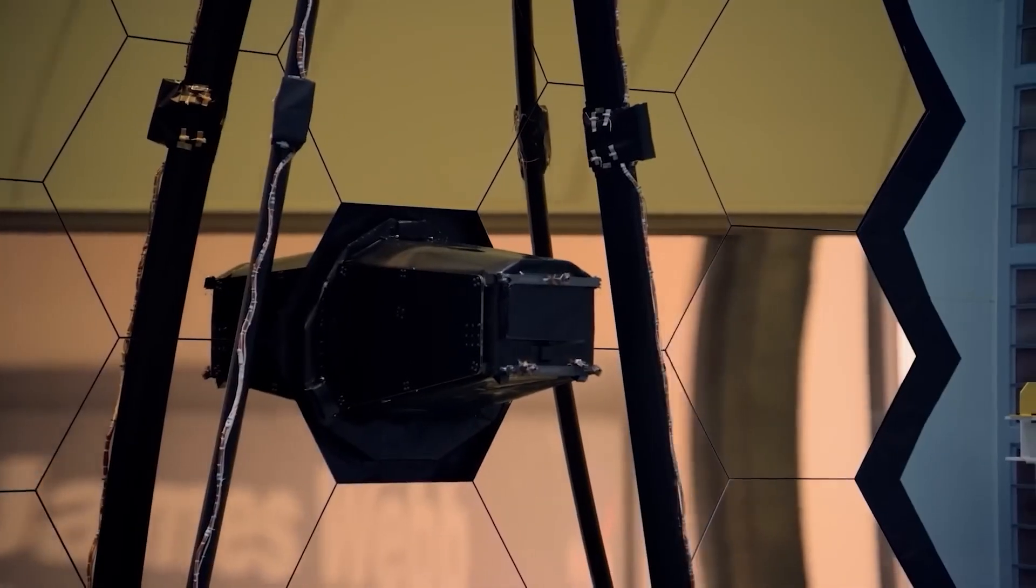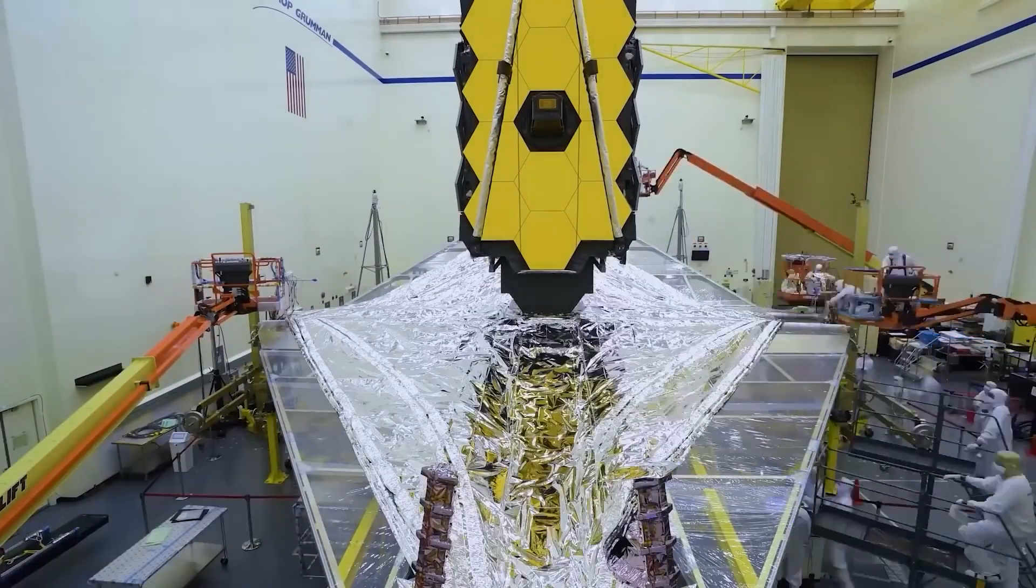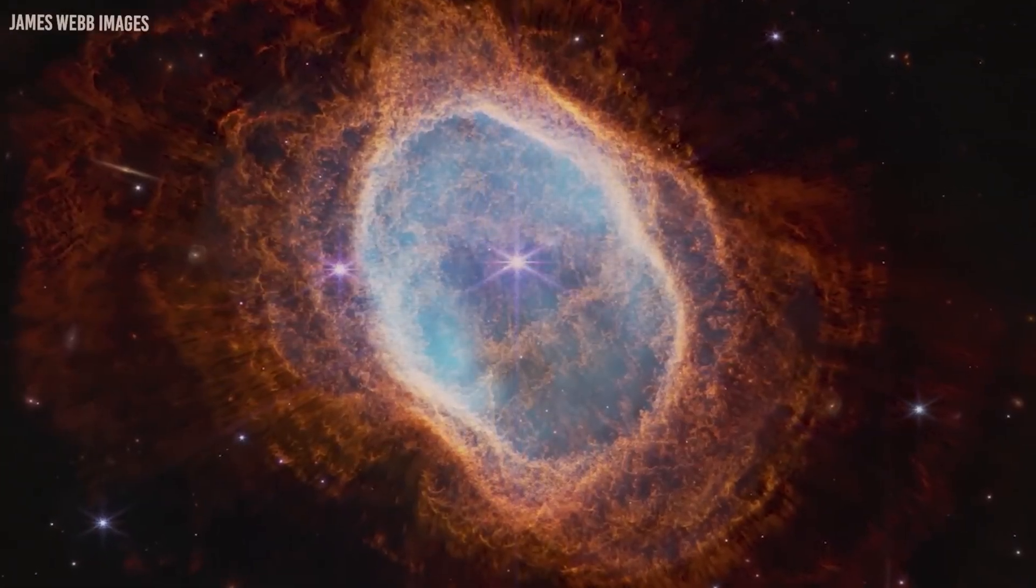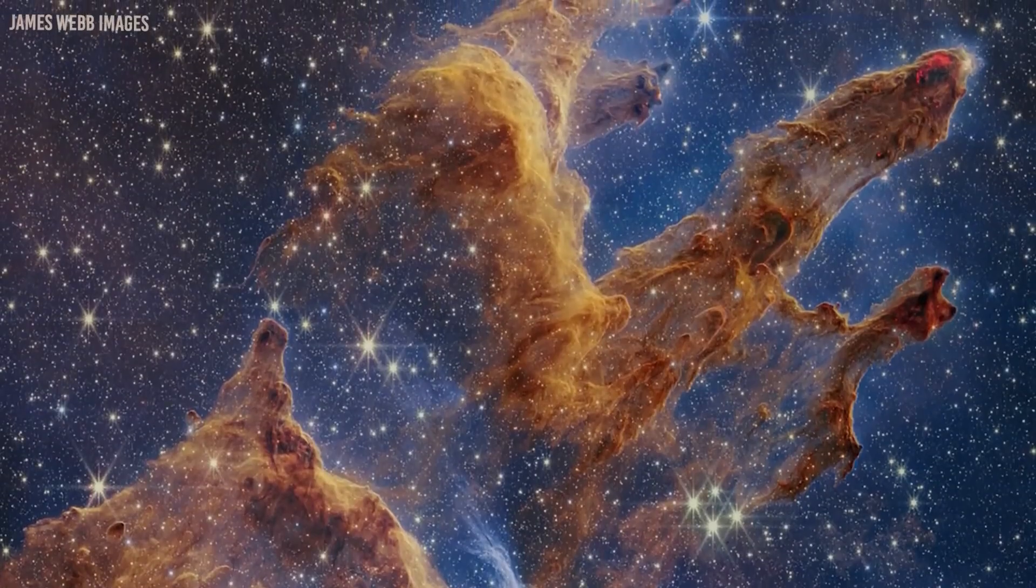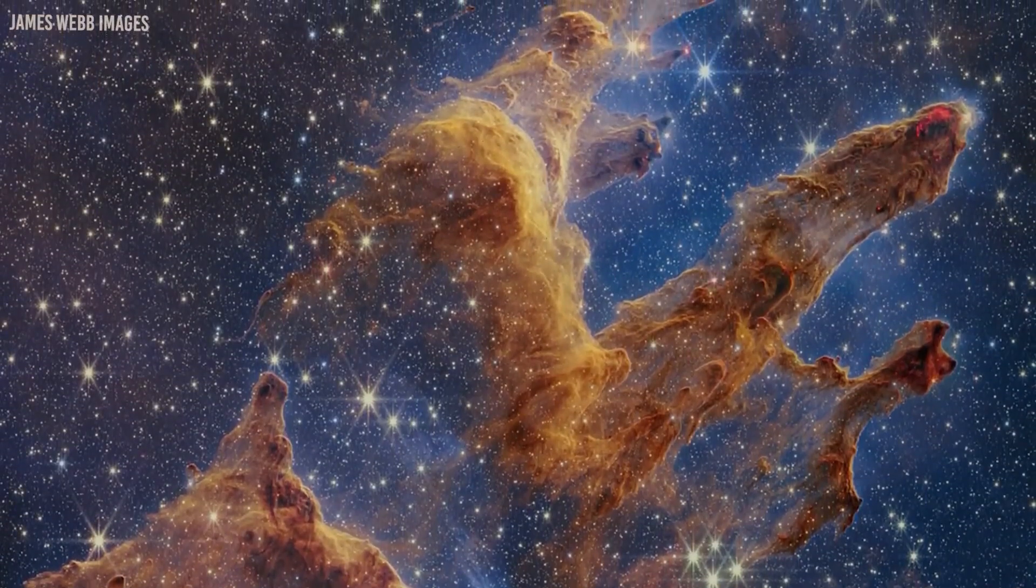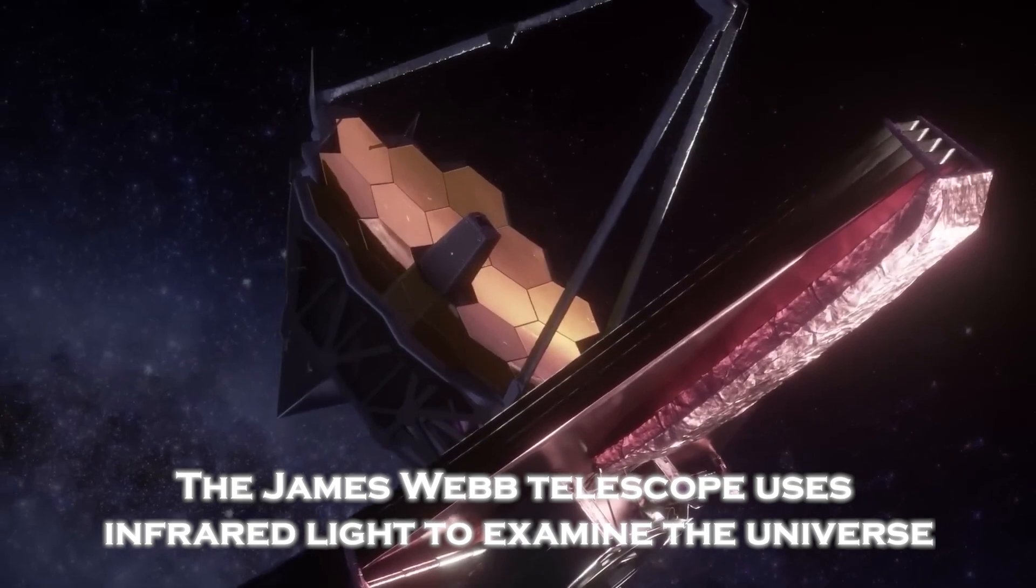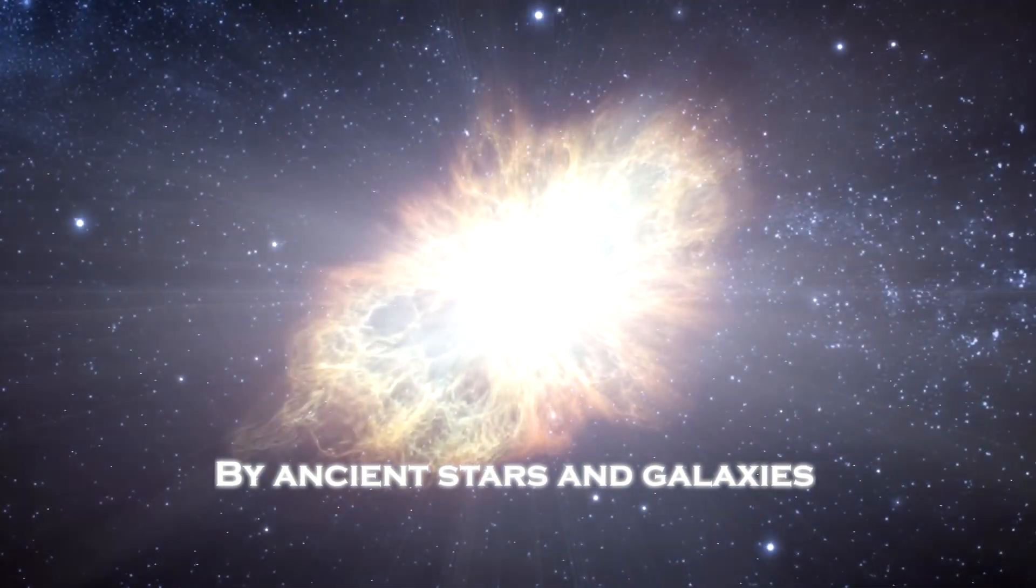In addition, this instrument has allowed scientists to study the infancy of the cosmos, making a surprising discovery about the existence of six enormous galaxies that existed between 500 and 700 million years after the Big Bang, radically changing our understanding of galaxy formation. The James Webb telescope uses infrared light to examine the universe, as this wavelength is undetectable to the human eye and allows us to capture the faint light emitted by ancient stars and galaxies.